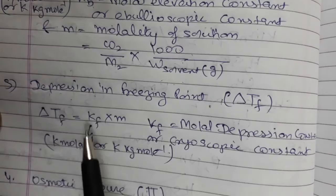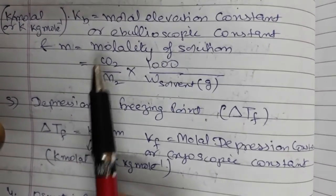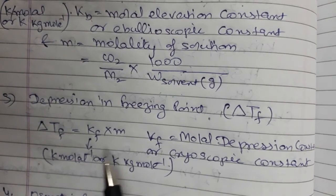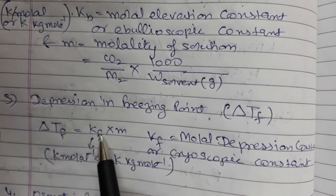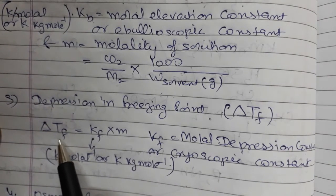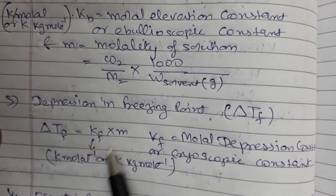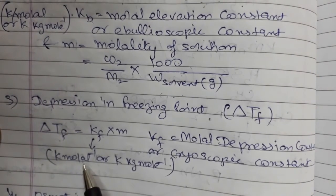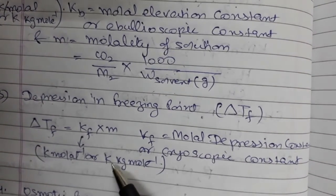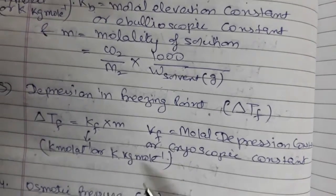Kf is also known as the cryoscopic constant, and m is again the molality of the solution. We have studied Kb and Kf as constants. Their units can be found from the formula: Kf = delta Tf upon m. Since delta Tf is in Kelvin and m is molality, the units of Kf are Kelvin per molal, which can also be written as Kelvin·kilogram per mol. The same units apply to Kb.